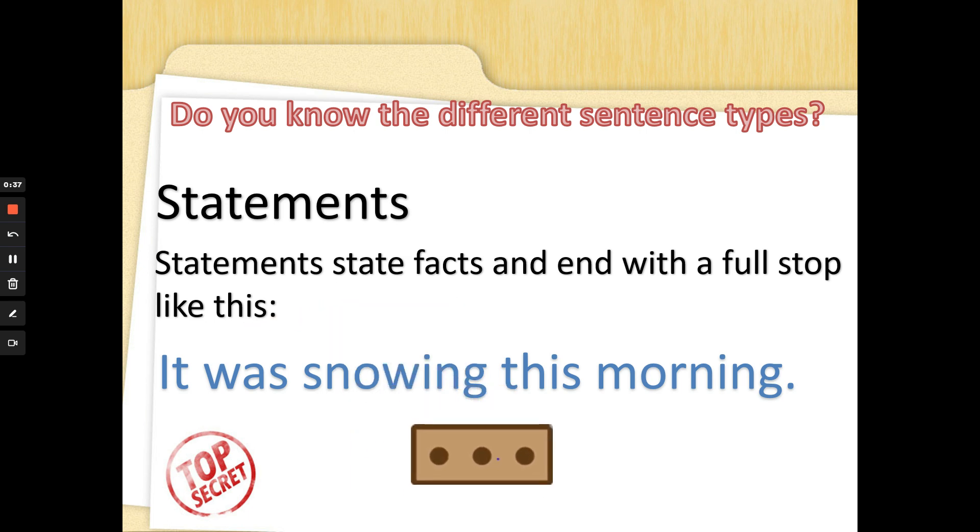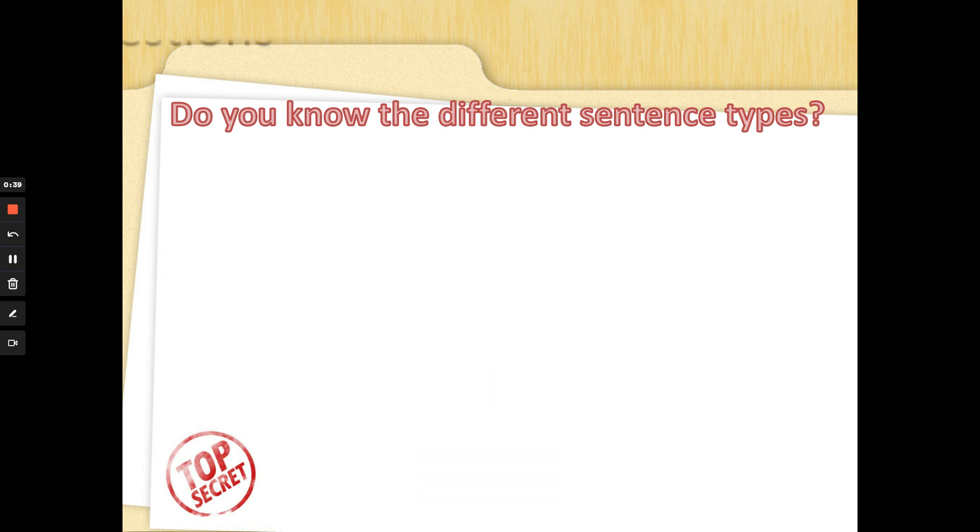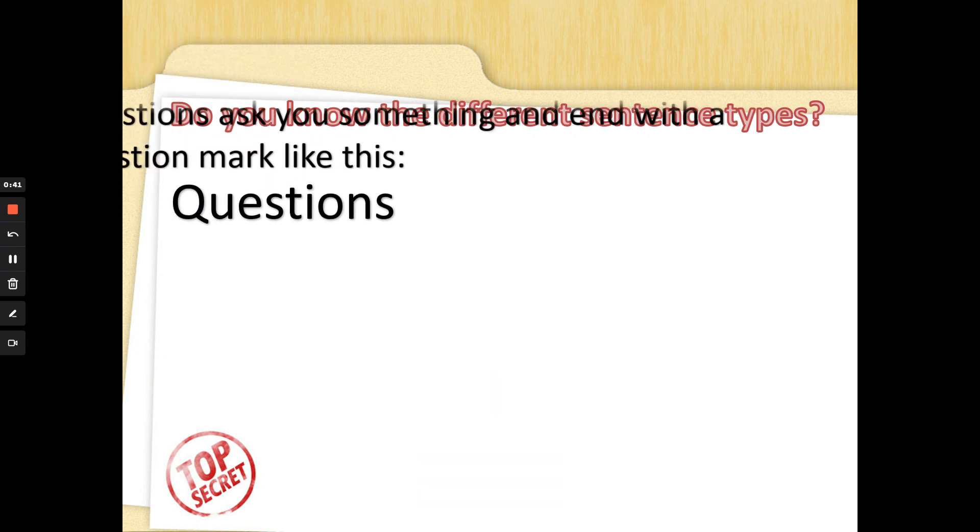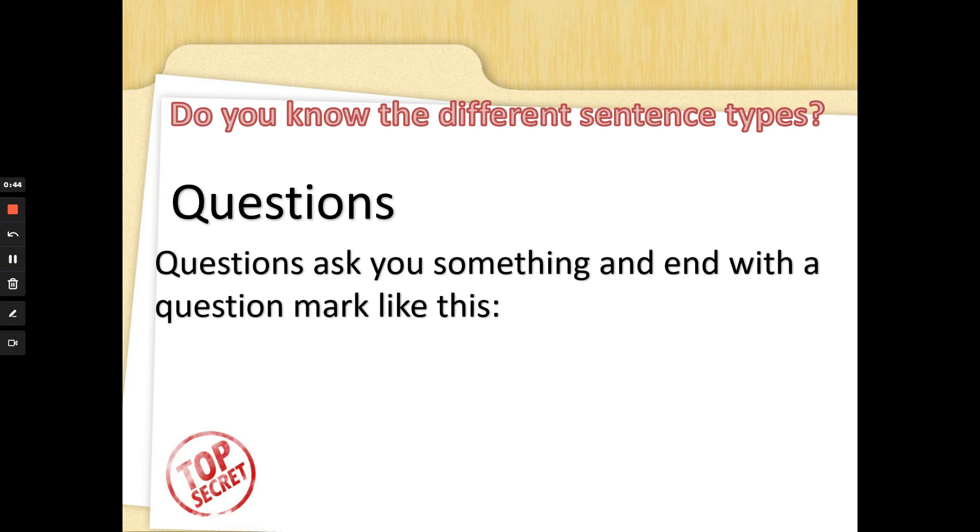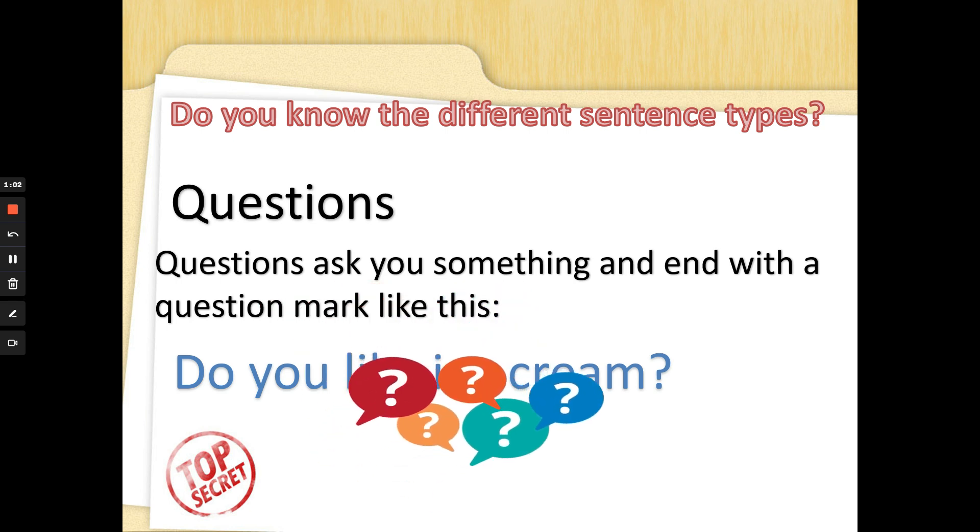Another sentence type is one that we're getting good at now. Questions. Now a question asks you something and ends with a question mark like this. Do you like ice cream? And as I was saying that you might have been saying yes or no. A question sentence will mean that an answer pops into your head and it ends with a question mark and it still starts with a capital letter. Well done. Fantastic.